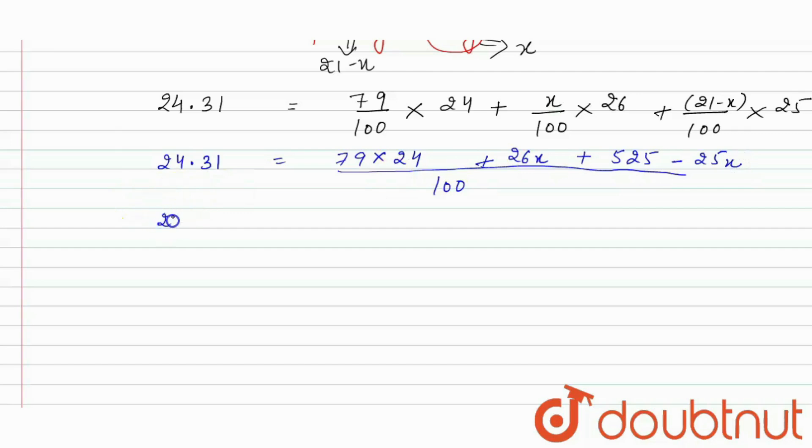So it will be 24.31 is equal to 1896 plus 525 plus x. So here the value of x will be 10.